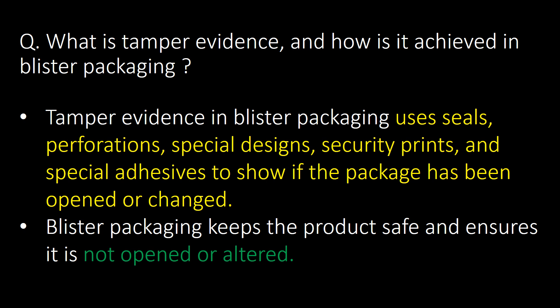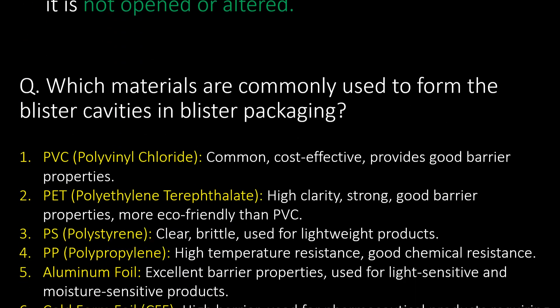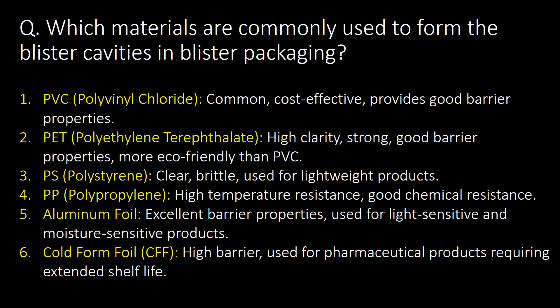What is tamper evidence and how is it achieved in blister packaging? Tamper evidence in blister packaging uses seals, perforations, special designs, security prints, and special adhesives to show if the package has been opened or changed. Blister packaging keeps the product safe and ensures it is not opened or altered. Commonly used materials to form blister cavities include PVC (polyvinyl chloride), PET (polyethylene terephthalate), PS (polystyrene), PP (polypropylene), aluminium foil, and cold form foil.